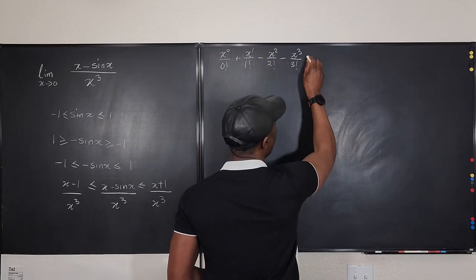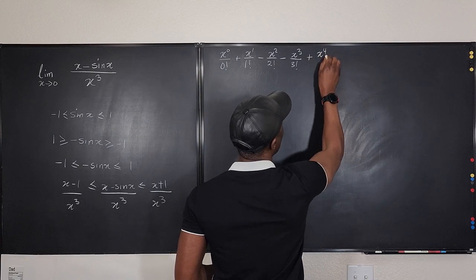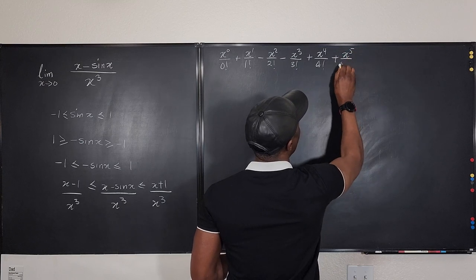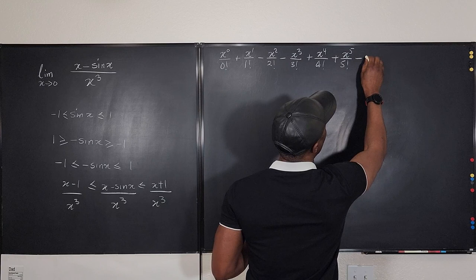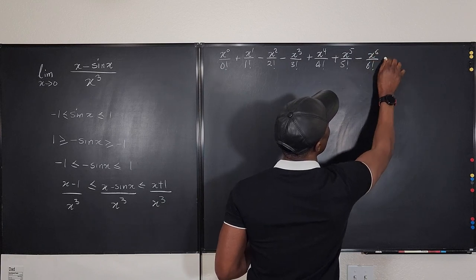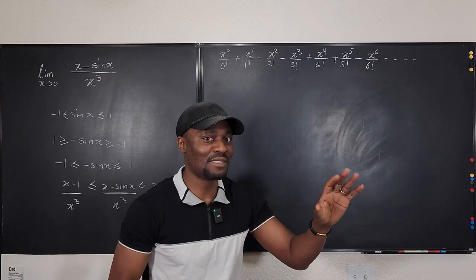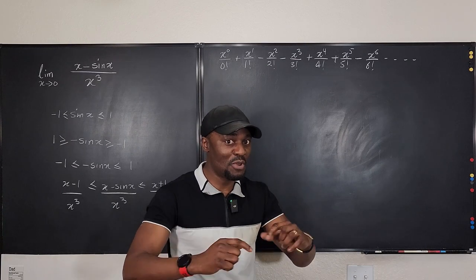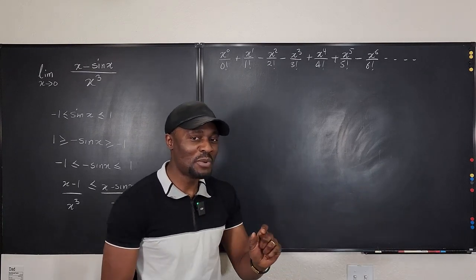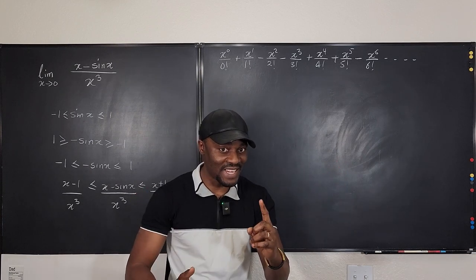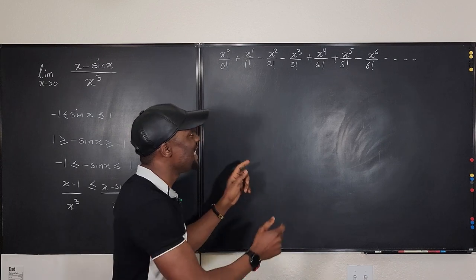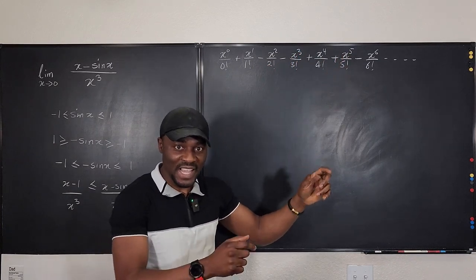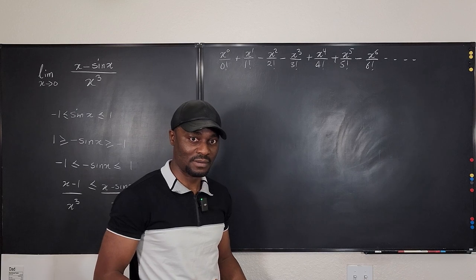You see, you have plus, plus, minus, minus, you start again, plus, plus. So it's going to be plus x to the 4th over 4 factorial, plus x to the 5th over 5 factorial, minus x to the 6th over 6 factorial. You just keep going like that, alternating plus, plus, minus, minus, plus, plus. Now, which one is this? Well, it's neither sine nor cosine, but I want to help you remember how to write them. So remember that cosine is an even function, sine is an odd function. So what you want to do is take out everything here that is odd, all the odd terms, and that would be your sine. Take out all the even ones, and that would be your cosine.